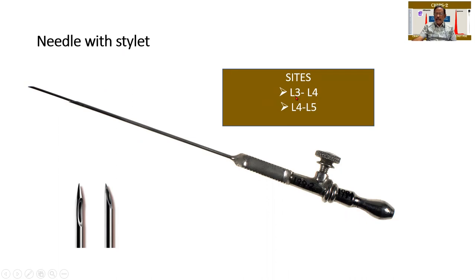The common sites are L3-L4 or L4-L5. Generally these sites are chosen because the spinal cord ends there, so that there is no direct damage to the spinal cord. Between L3 and L4, it is not the bone that we are piercing but the intervening tissue.